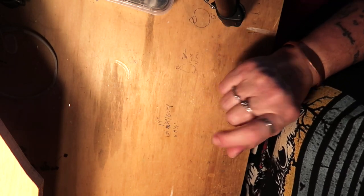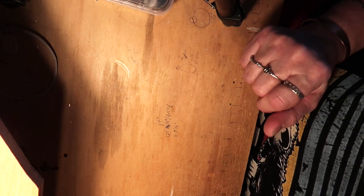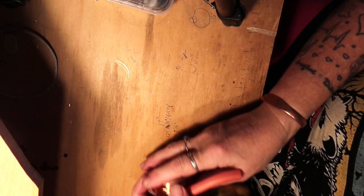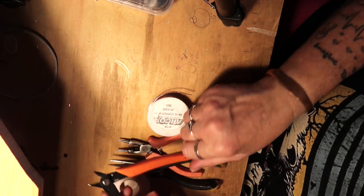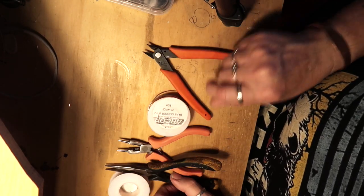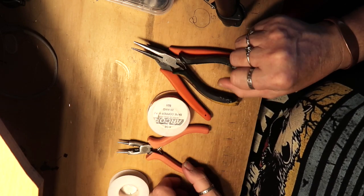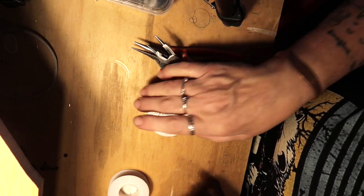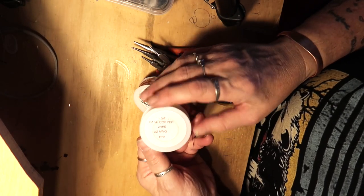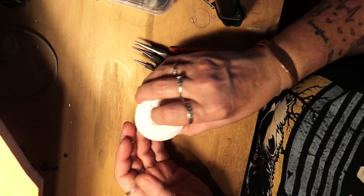Here we go. You're gonna need some tools and some wire. So I've got a pair of side nippers, a pair of chain nose, a pair of round nose. I've got some 20 gauge copper wire and some 22 gauge copper wire.